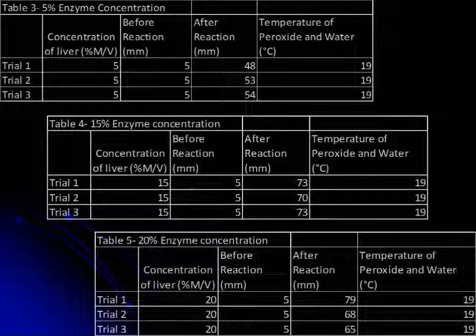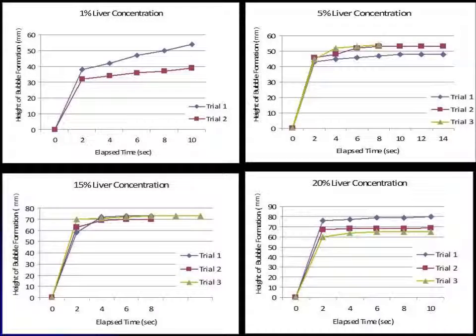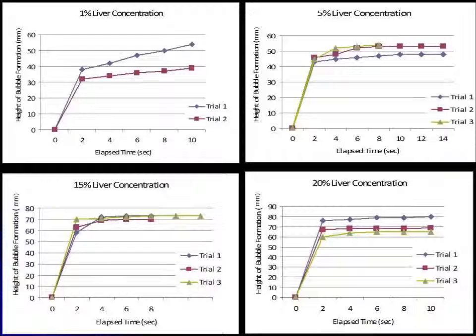Graphs were also constructed for each percent enzyme concentration to calculate the rate at which the reaction occurred, also known as rise over run. In addition, an increase in rate of reaction can be seen overall as enzyme concentration increased.